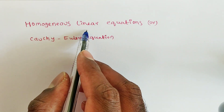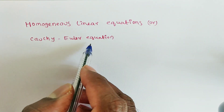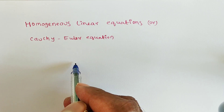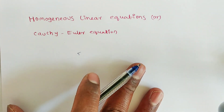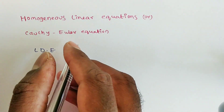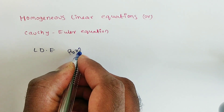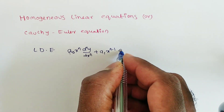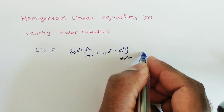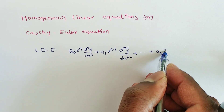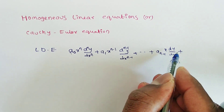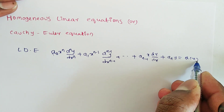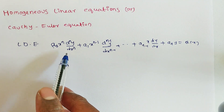Now we are discussing homogeneous linear equations or Cauchy-Euler equations. In the previous videos, we discussed linear differential equations with constant coefficients. Now we are discussing linear differential equations with variable coefficients. A linear differential equation is in the form of A₀ xⁿ · dⁿy/dxⁿ + A₁ xⁿ⁻¹ · dⁿ⁻¹y/dxⁿ⁻¹ + ... + Aₙ₋₁ x · dy/dx + Aₙ · y = Q(x), called the Euler-Cauchy equation.